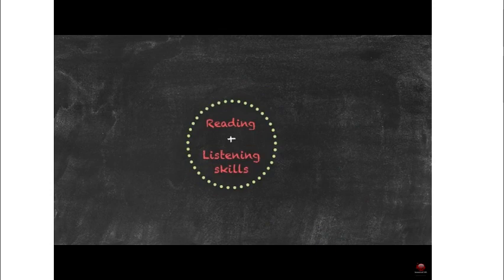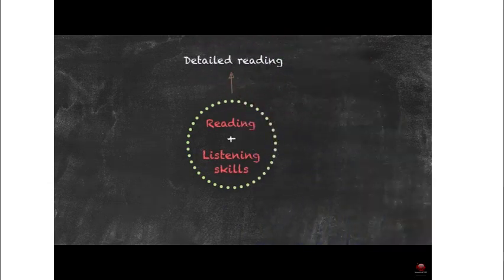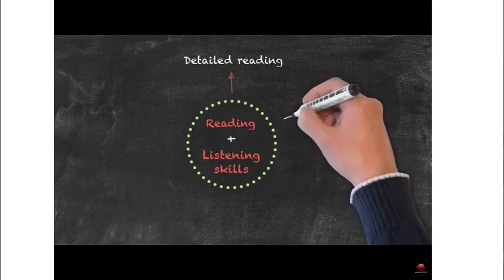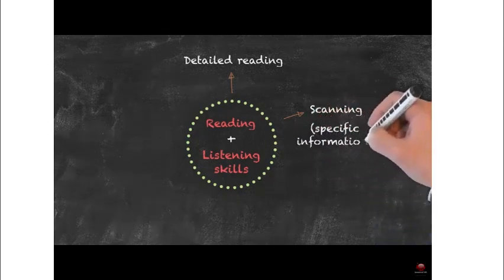We can show different examples of reading. For example, if you had just bought a new video camera and along with it came a book of instructions, in order to get that camera working you would need to very carefully read each page of that brochure — that would be called detail reading. Unfortunately, most of us don't get our cameras working straight away because we don't do that detailed reading; we tend to do something quicker called scanning, where we look for specific information.